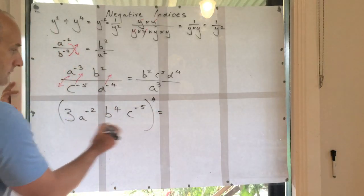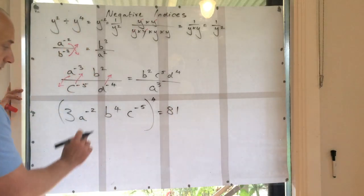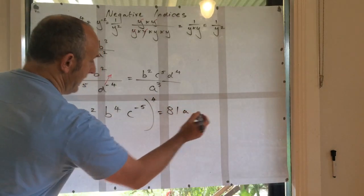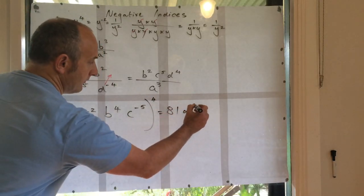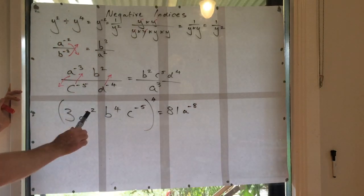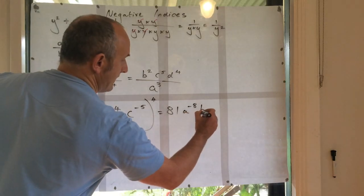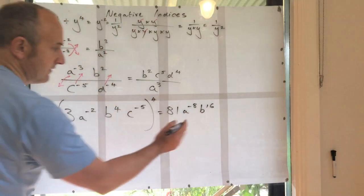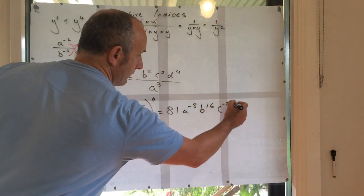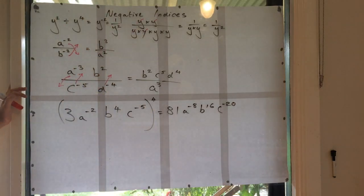So that's going to give me 81, a to the minus 8, and you see a negative times a positive is a negative, b to the 16, c to the negative 20. Now, is this my final answer? No, it's surely not.